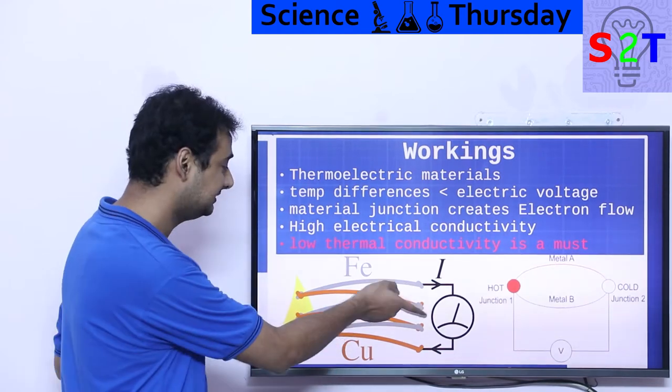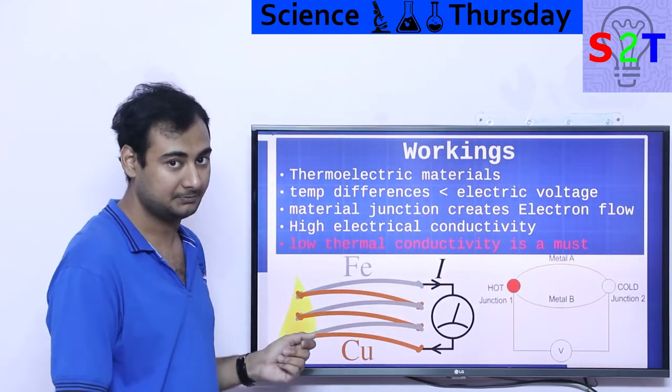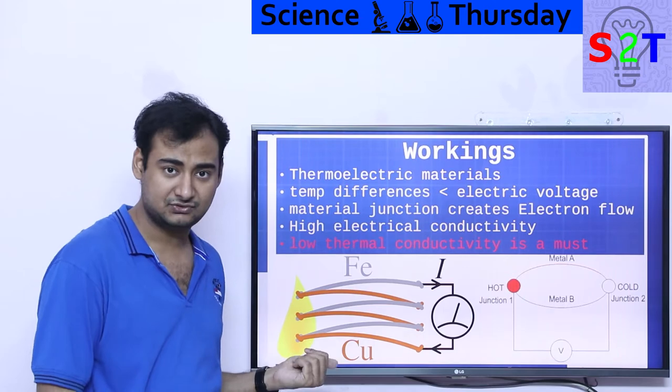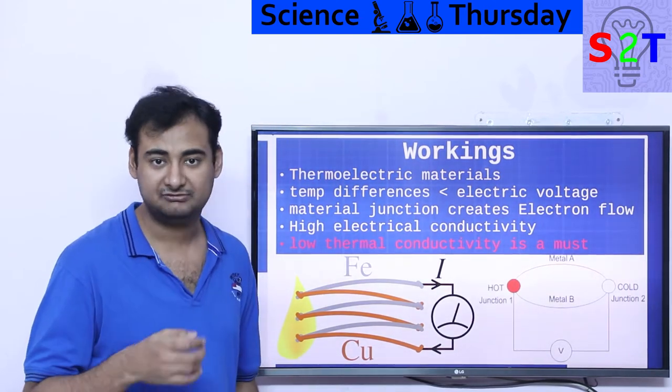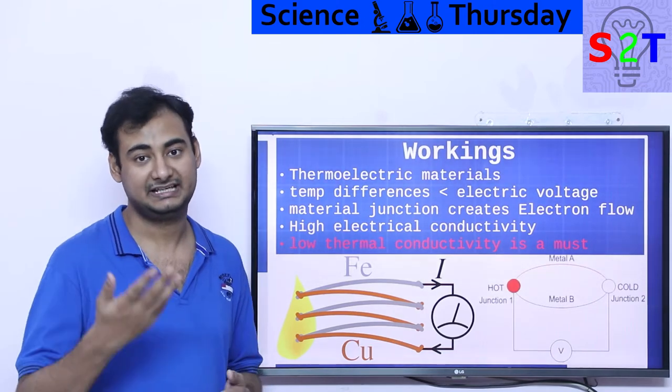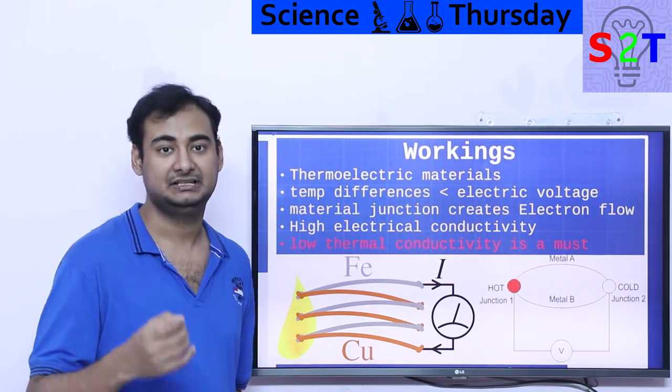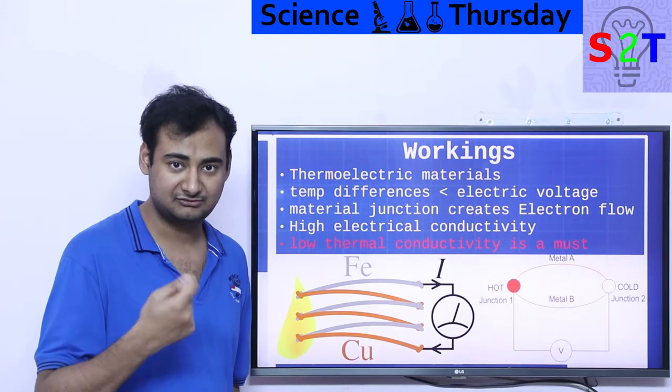That's why you need something that allows electrons to flow from point A to point B, but does not allow thermal energy to go from point A to point B, so it cannot equalize, self-equalize. That's the whole reason you cannot just take iron and copper.